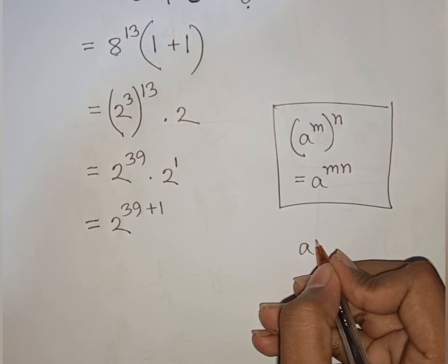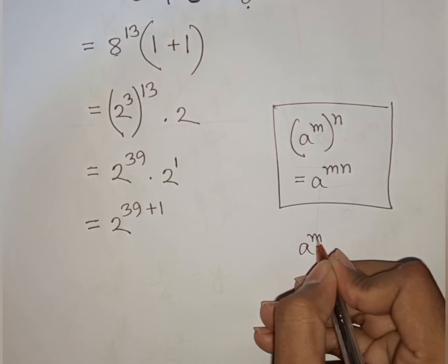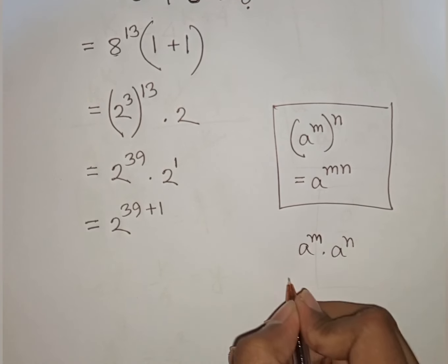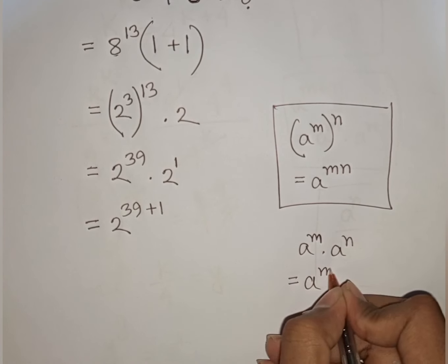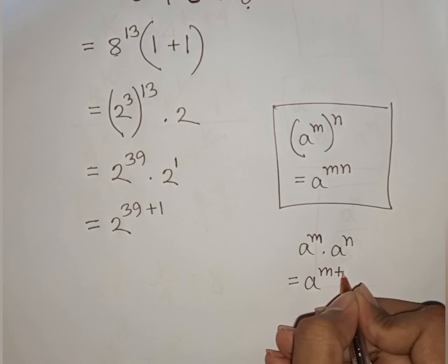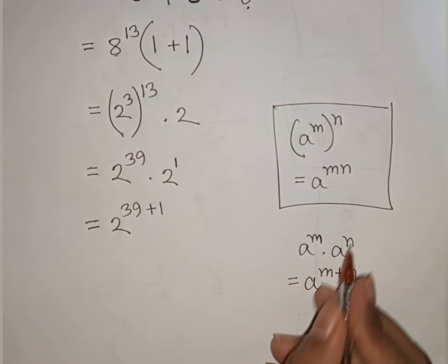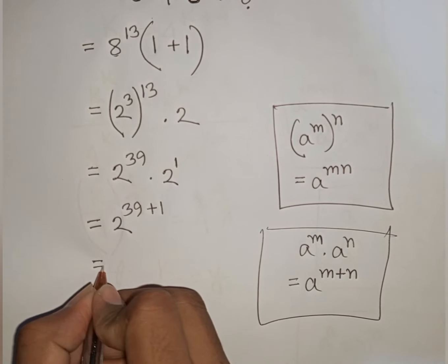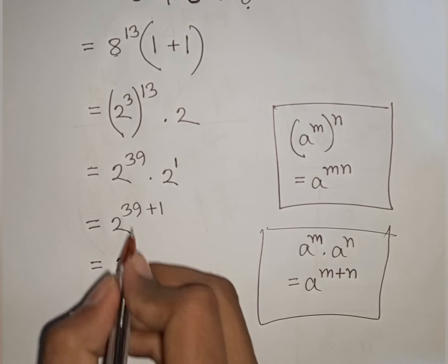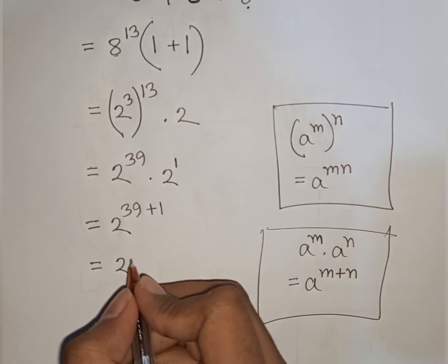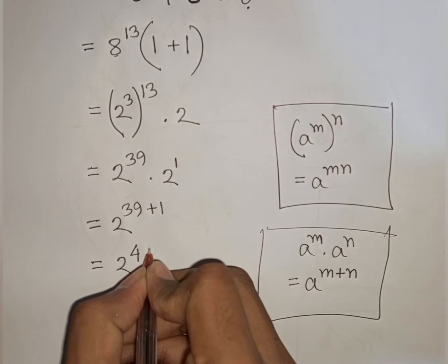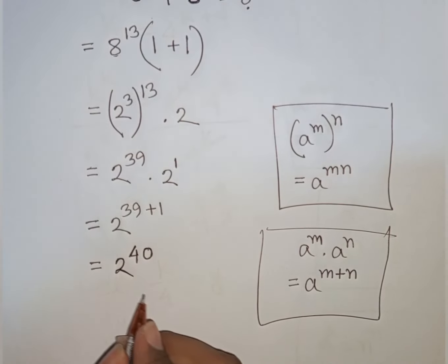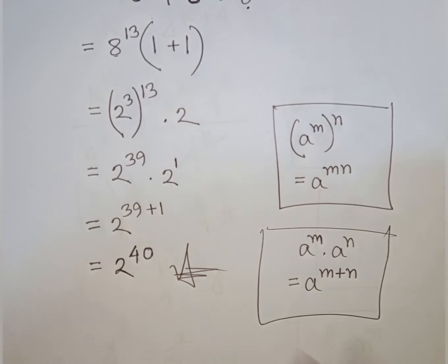Now, 2 to the same base but different powers, so according to the rule a power m times a power n equals a power m plus n — same base but different power — then 2 power 39 plus 1, that means it will be 2 power 40. So, 2 power 40 is our final answer.